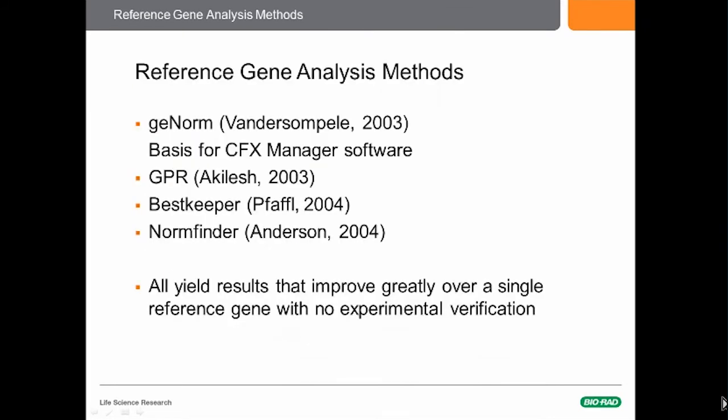How do you evaluate reference genes once you've got the data? There's a series of different software tools that will do this for you. The first was Genorm by Van de Sample, and it's the basis for the BioRad CFX Manager software. There is also GPR, Basskeeper, and NormFinder. All of these will give similar results, and all of them will improve greatly over using a single reference gene with no experimental verification.